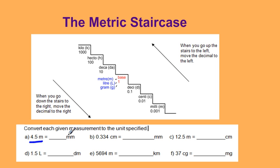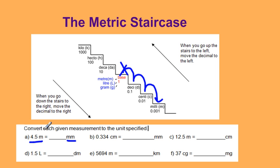4.5 meters converting to millimeters. Meters is my base. I'm going to millimeters so I'm going down three spots. If I move my decimal place over three, I'm going to be left with 4,500 millimeters.